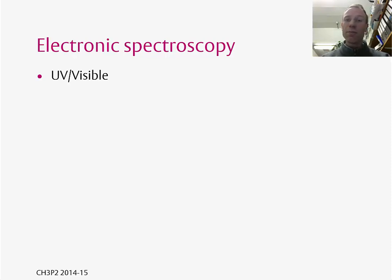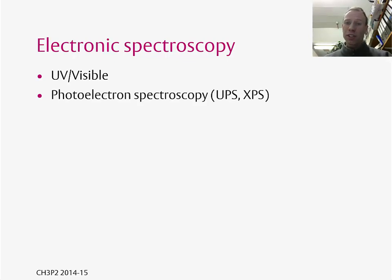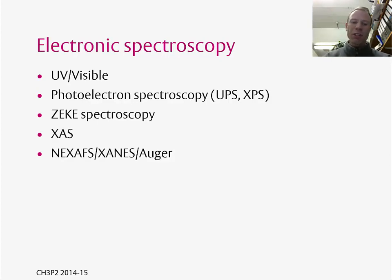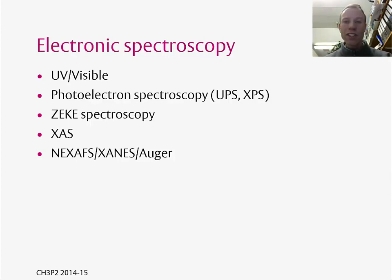In that experiment you excite an electron from a ground electronic state in iodine up to an excited orbital. There are lots of other types of electronic spectroscopy techniques as well, including photoelectron spectroscopy techniques such as ultraviolet photoelectron spectroscopy and x-ray photoelectron spectroscopy, where we excite an electron from a molecule to the vacuum so it actually leaves the molecule. There are also other techniques like ZEKE spectroscopy, x-ray absorption spectroscopy, NEXAFS, XANES, and Auger spectroscopy.